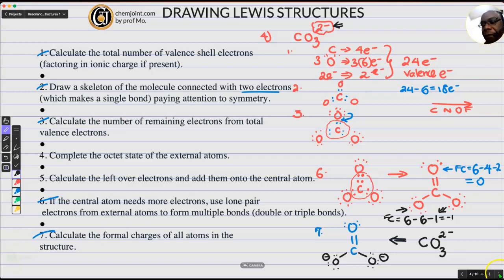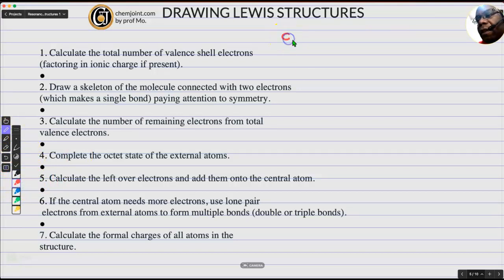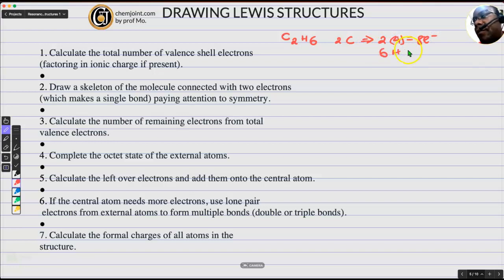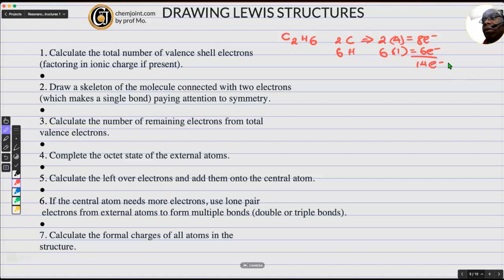Sometimes you might need to share. Let's do one organic structure. What if you need to draw the Lewis structure of C2H6? Each carbon has a valency of 4, so it will be twice 4 — you get 8 electrons. Each hydrogen has a valency of 1. You have 6 hydrogens, so you get 6 from that. Total number of valence electrons will be 14 valence electrons. Step one is done.